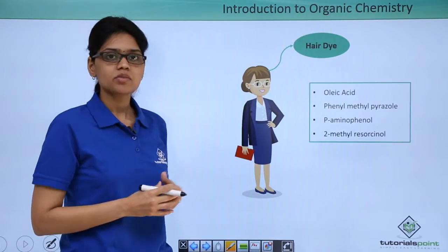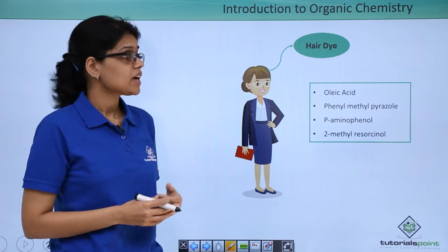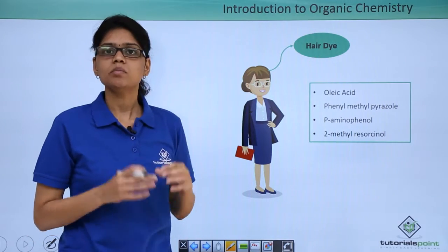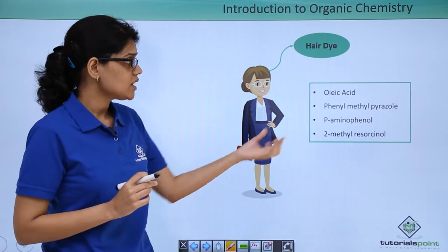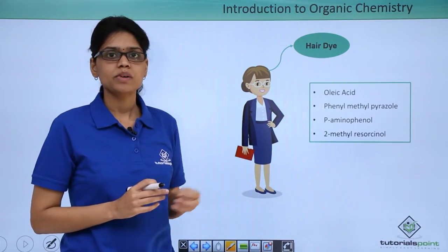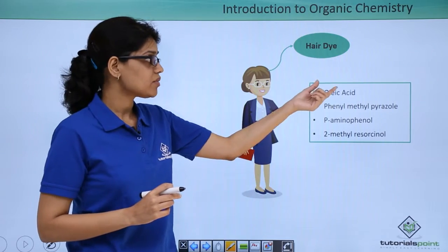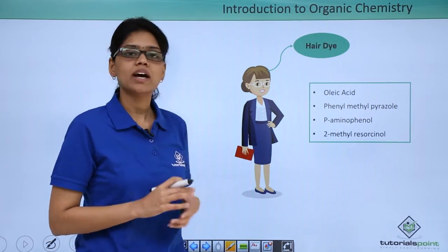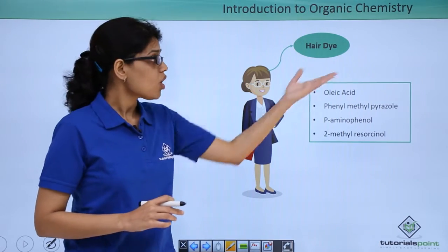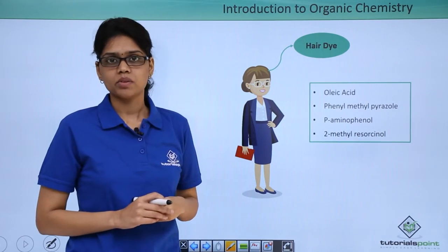Here we have an image of a woman, and we can see that she is using a particular type of hair dye. Now if you look at the cover of a hair dye, you can see that a typical composition would be something like this. It might have oleic acid, phenylmethyl pyrazole, paraaminophenol, and 2-methyl resorcinol, all of which are nothing but organic compounds.